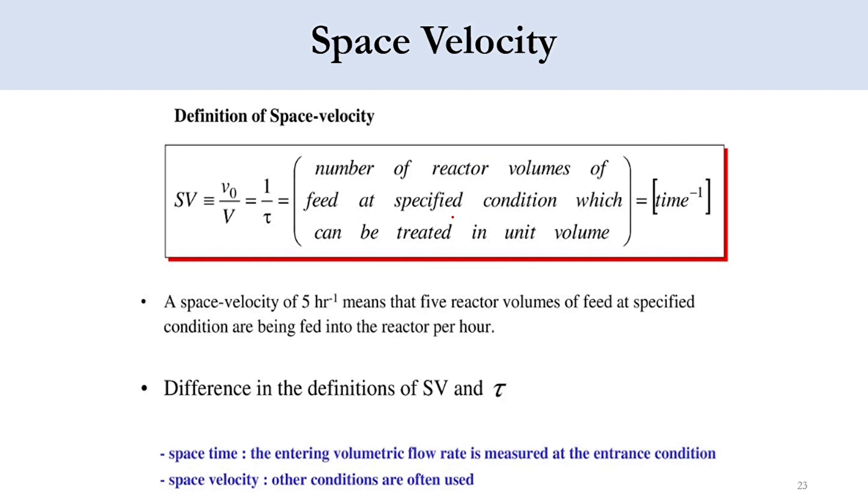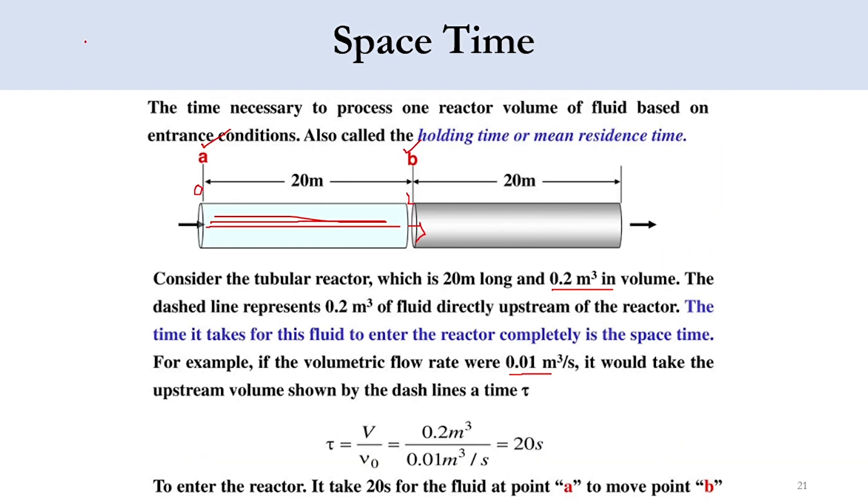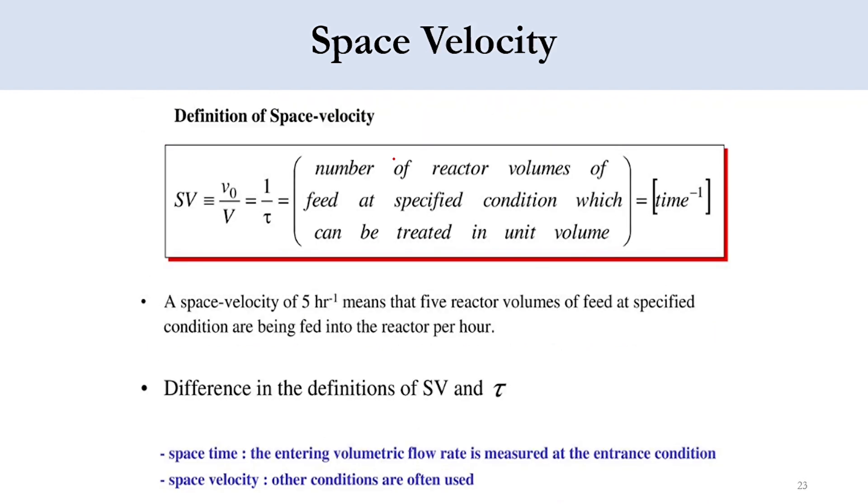Finally, the space velocity concept: it is the reciprocal of the space time, like the number of reactor volumes of feed at specified condition which can be treated in a unit time. V0 over capital V. Now its unit will be per time. The units of space time were time, so per hour. Time inverse. A space velocity of 5 per hour means that 5 reactor volumes of feed at specified condition are being fed into the reactor per hour. A space time of 1 hour means that the fluid has spent 1 hour in the reactor or it has moved from point A to point B. But once it goes to per hour, it means that these reactor volumes have been processed per hour. For example, if it is 2 per hour, it means 2 reactor volumes. If it is 10 per hour, it means 10 reactor volumes have been processed per time.